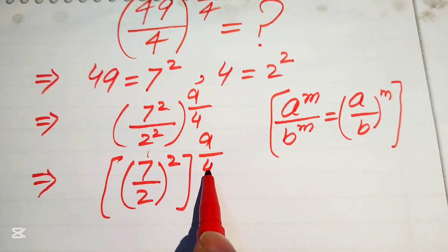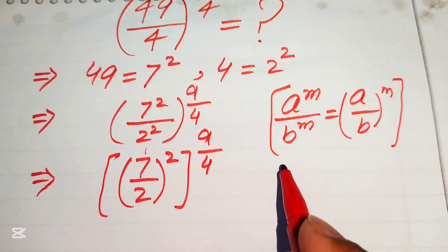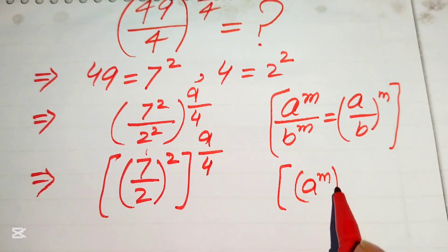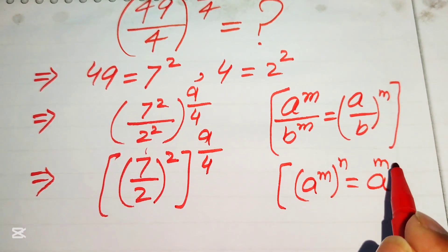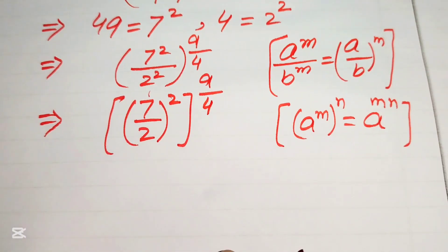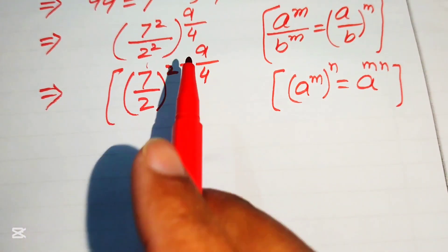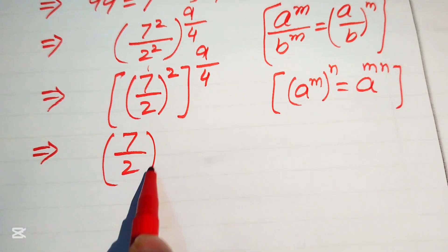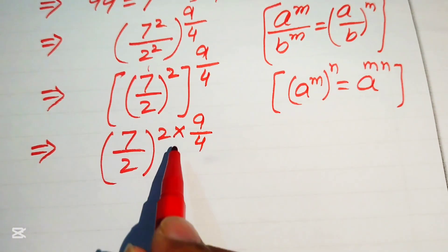In the next step, we need another exponent law: if we have a to the power of m to the power of n, it equals a to the power of m times n. According to this law, we multiply the two exponents, giving us 7 over 2 with exponent 2 multiplied by 9 over 4.